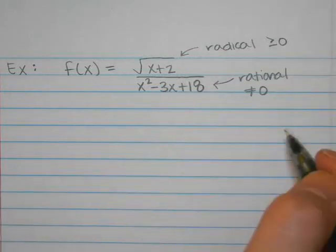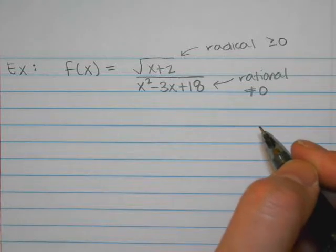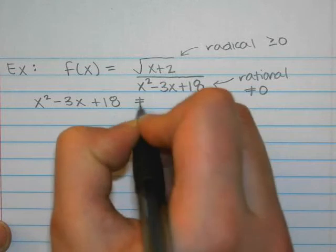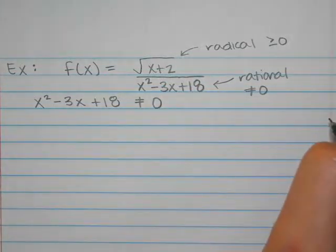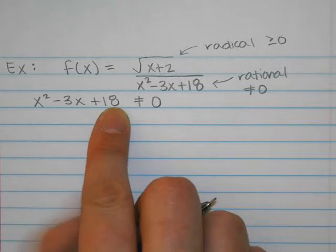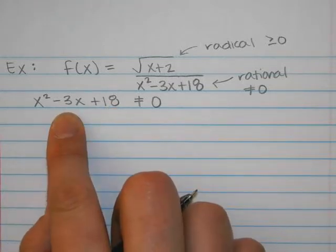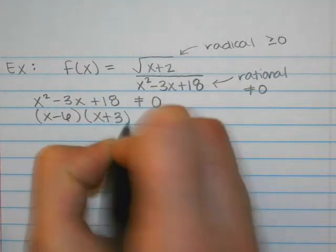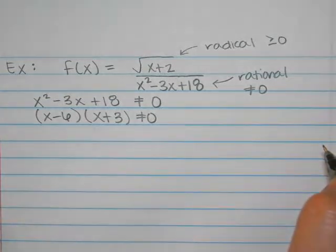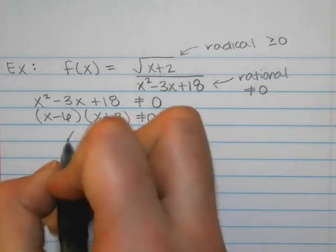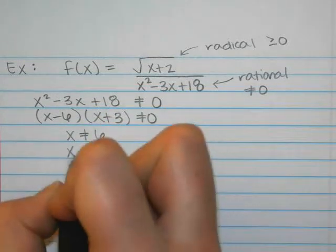So which part do you guys want to deal with first? The bottom. Okay, so we're going to say x squared minus 3x plus 18 cannot equal zero. We have a quadratic — how do we solve it? We factor. We're looking for two things that multiply to be 18 but add to be negative 3. Negative 6 and positive 3. So x minus 6, x plus 3, cannot equal zero. The two values for x are positive 6 and negative 3. So x cannot equal positive 6, and x cannot equal negative 3.